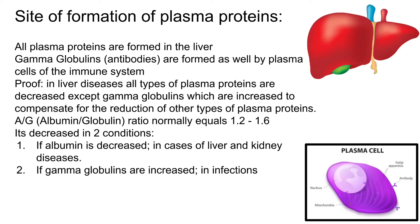The albumin-globulin ratio normally equals between 1.2 and 1.6. It is decreased in two conditions: if albumin is decreased, which is in cases of liver and kidney diseases, or if gamma globulins are increased, in cases of infection.